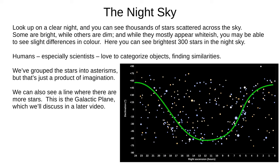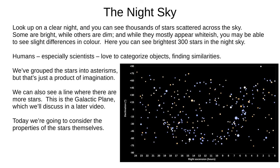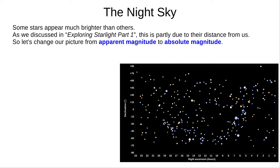We can also see a line where there are more stars — this is the galactic plane and will be the subject of a future video. Today we're going to consider the properties of the stars themselves. Some stars appear much brighter than others, but as discussed in part one, this is partly due to their distance from us, which doesn't tell us much about their properties. So let's change the picture from apparent magnitude to absolute magnitude, bringing these 300 stars to a distance of 10 parsecs.